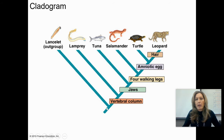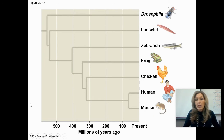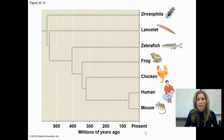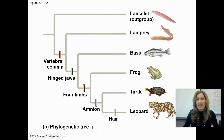Some phylogenetic trees do actually represent time — the axes will be labeled if they do. For example, you might be asked how many million years ago a chicken and a zebrafish shared a common ancestor. You'd find where they shared a recent common ancestor on the tree — that was 400 million years ago. Sometimes branch lengths show time, but most of the time a cladogram-style tree is just representative of order of events.